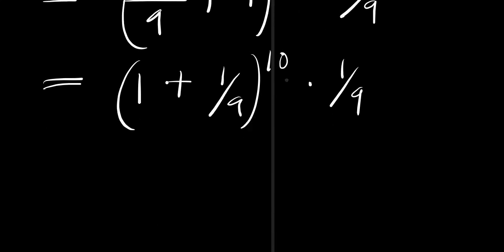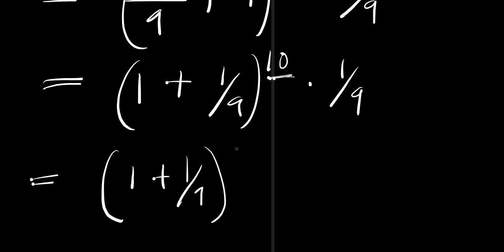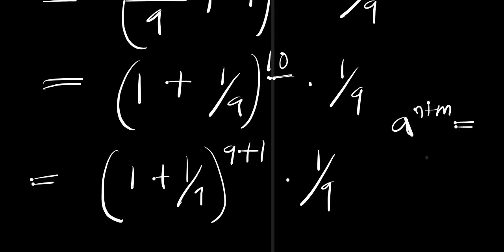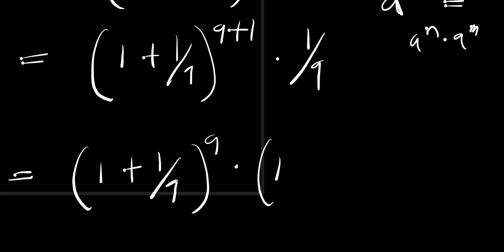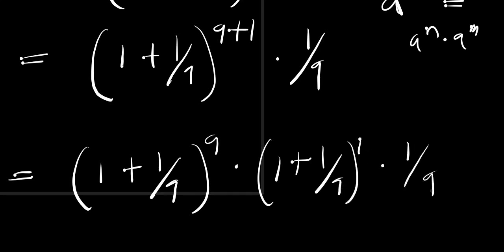Next, we rewrite the exponent 10 as 9 plus 1. So we have (1 + 1/9)^(9+1) times 1/9. Applying the identity a^(n+m) = a^n times a^m, we get (1 + 1/9)^9 times (1 + 1/9)^1 times 1/9.